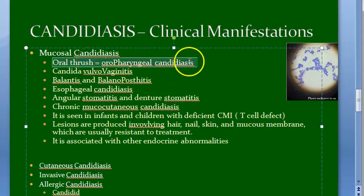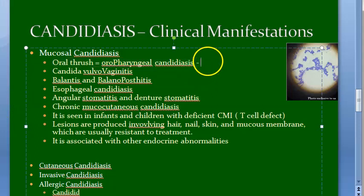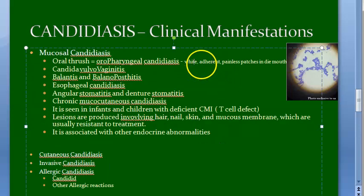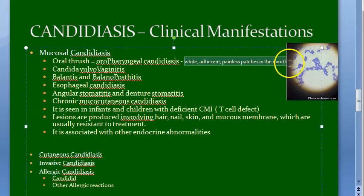Mucosal candidiasis includes oral thrush, which is oropharyngeal candidiasis presenting as white adherent painless patches in the mouth. Candida vulvovaginitis is characterized by pruritus (itching), pain, and vaginal discharge that is usually thin but may become whitish and curd-like. The whitish curd-like vaginal discharge is an important distinguishing feature to remember.